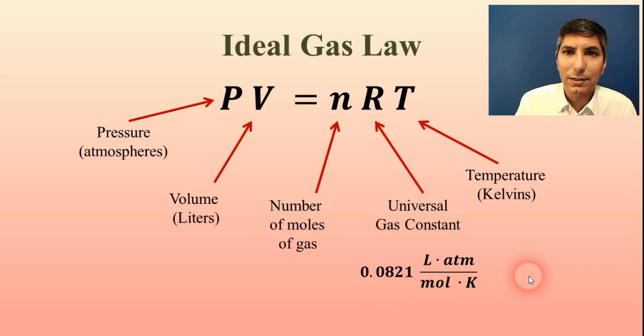Now notice the units. It's a constant, so it has funny units. It's liter atmospheres per mole kelvin. And that's one of the reasons why you have to have all these other units in those prescribed units. If you don't, then your constant doesn't work. So you have to use those other units, kelvins, moles, liters, and atmospheres, in order for this constant to work.